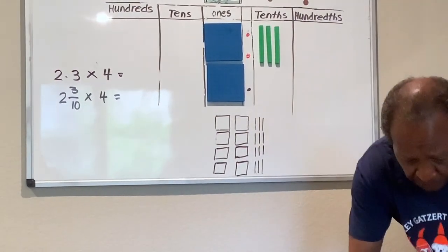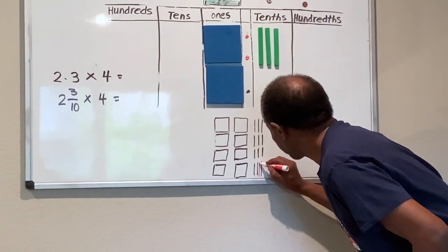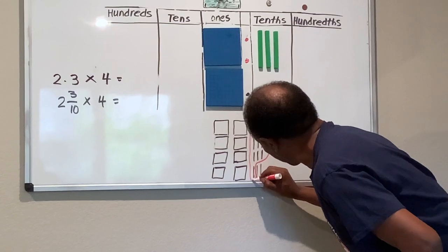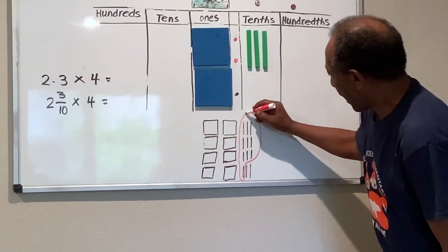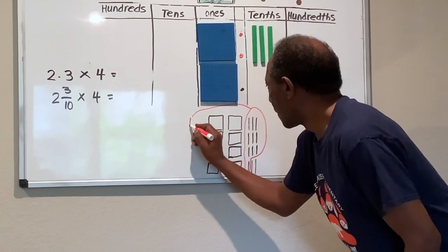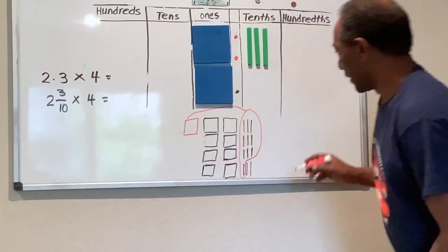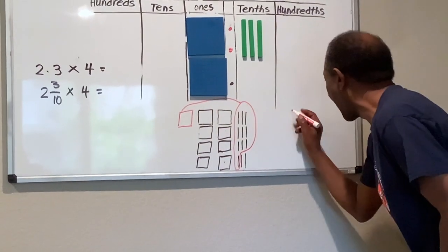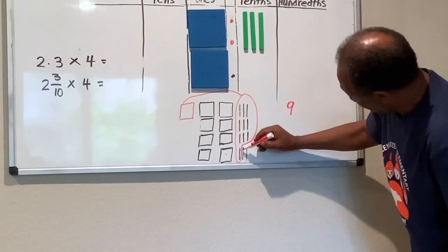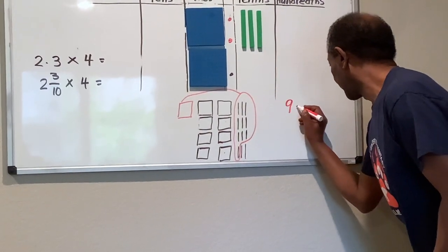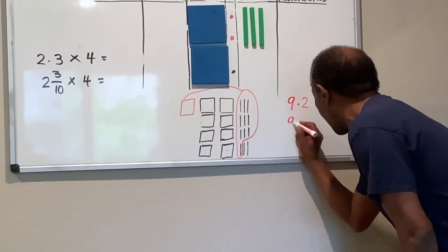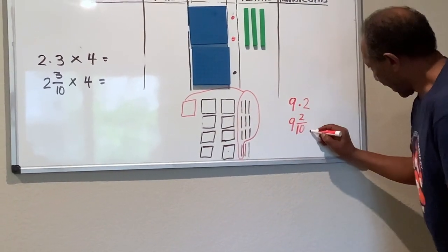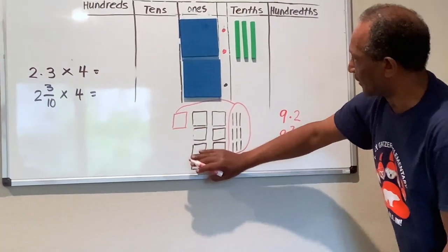After regrouping: nine wholes and two-tenths. So in decimal I will write it like this, and in fraction I will write nine and two-tenths.